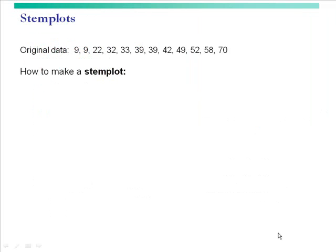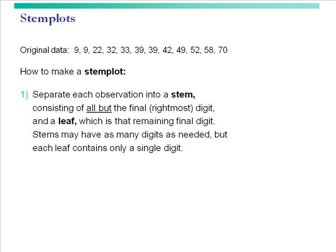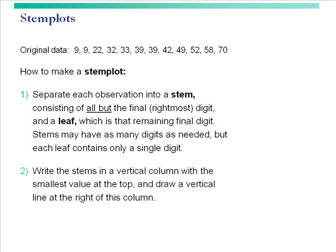I'm going to continue the graphing of quantitative data. Here we're going to look at how to make a stem plot. You're given a set of original data with the numbers as shown. To make a stem plot, you first need to take each observation and turn it into a stem consisting of all but the final rightmost digit, and a leaf. The leaf is that final digit. Stems can have as many digits, but the leaf can only contain a single digit. That's really important to remember.